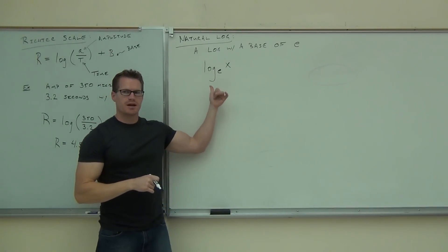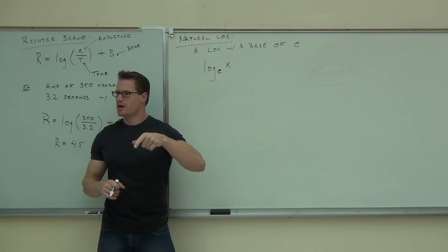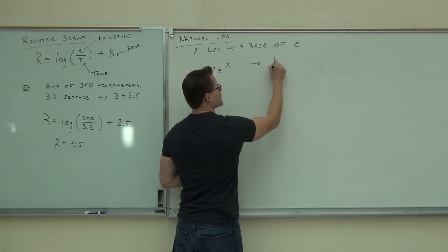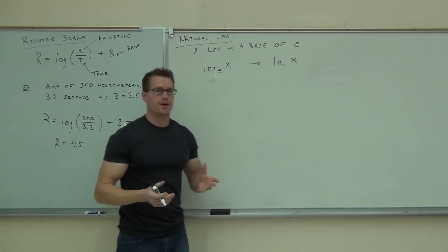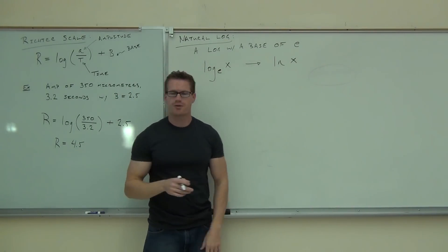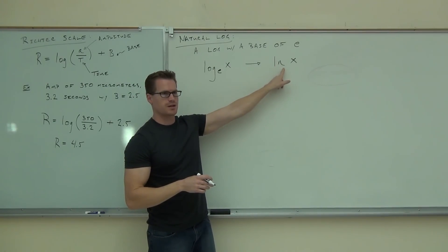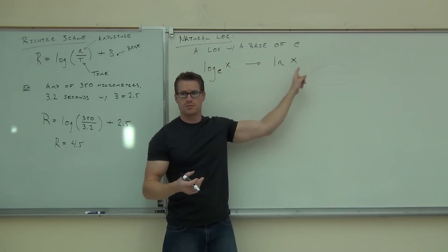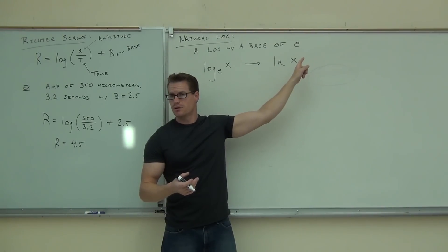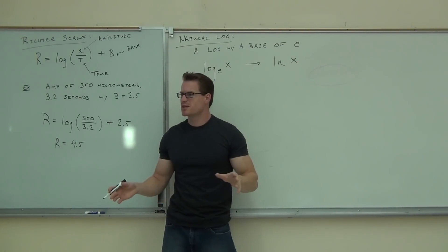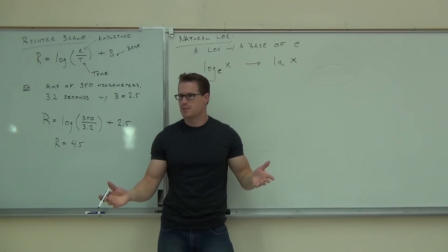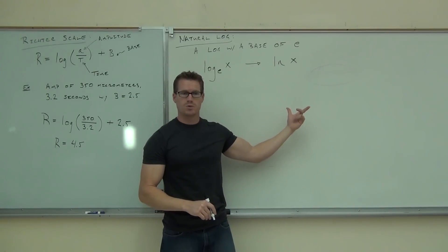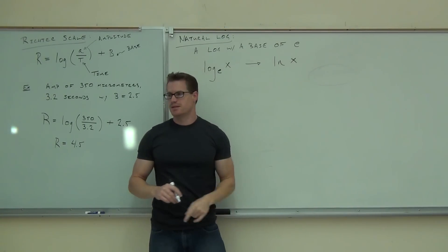You're never going to see it written as 'log base E.' Instead it's written as LN x — that stands for natural log. Where does LN come from? Log that's Natural. So when you see LN, it's still a logarithm — the base is E. You don't have to write the E; you just need to know that LN means base E. Common log has a base of 10. Natural log has a base of E. You don't even write the E — just know that when you see LN, the base is E.